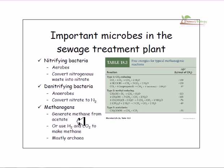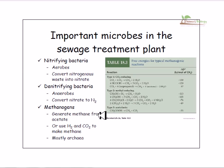Methanogens derive methane gas from organic materials by breaking down those materials. This process does not happen directly — first, polymers must be broken down into monomers, then fermentation of those monomers produces carbon dioxide and acetate. The methanogens then take that carbon dioxide and acetate and convert them into methane gas, though sometimes they can directly derive methane gas from complex structures.